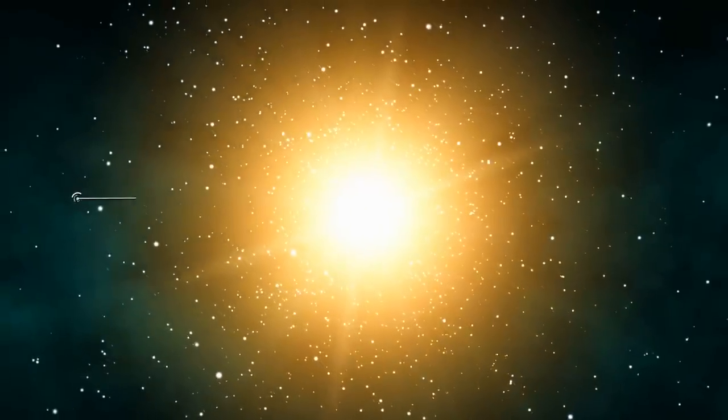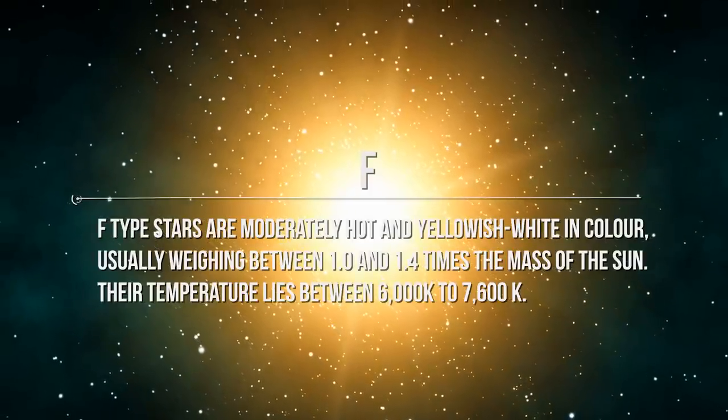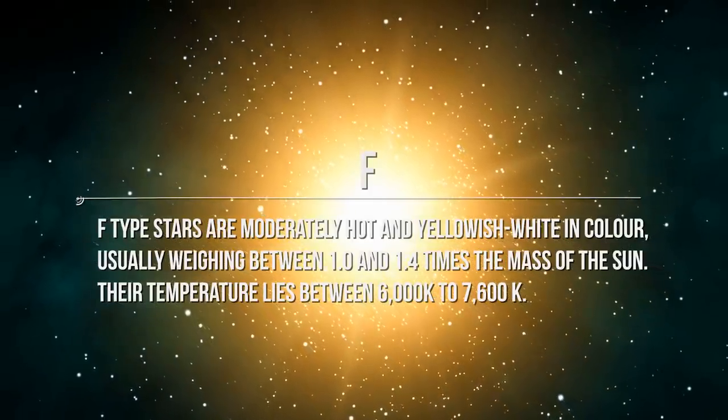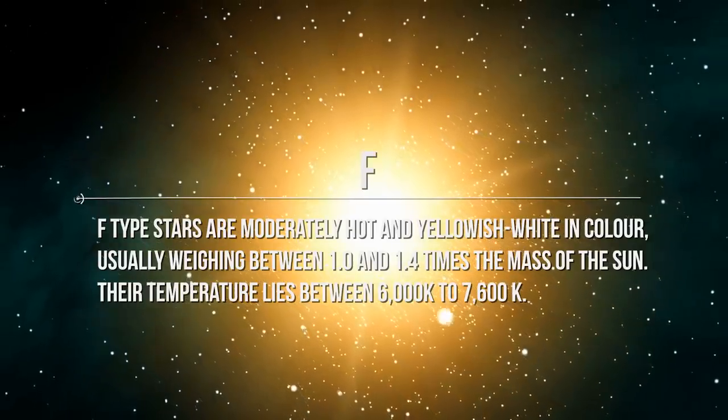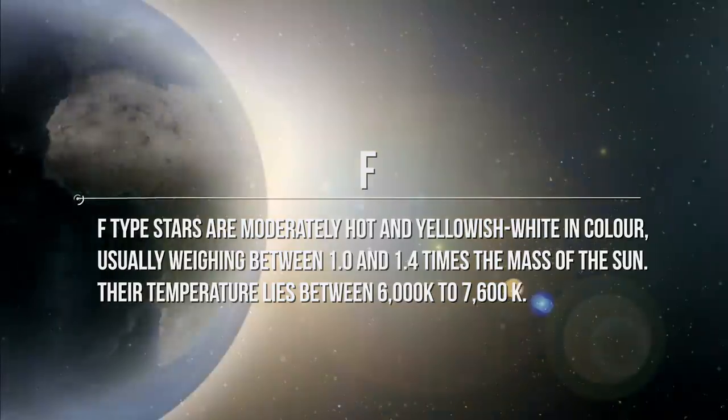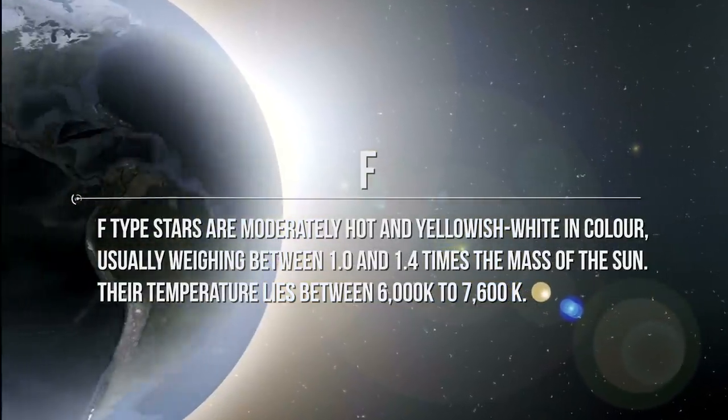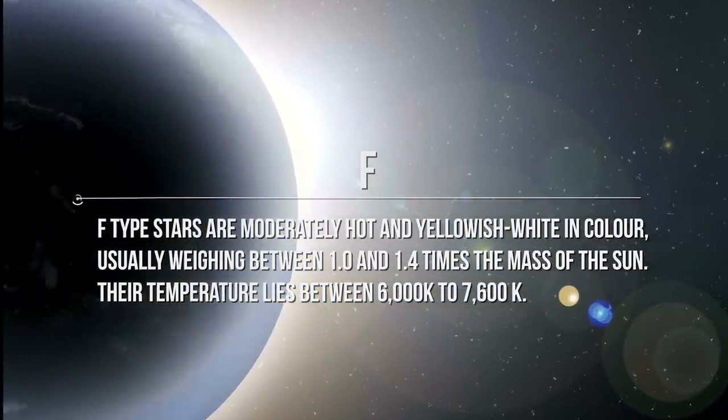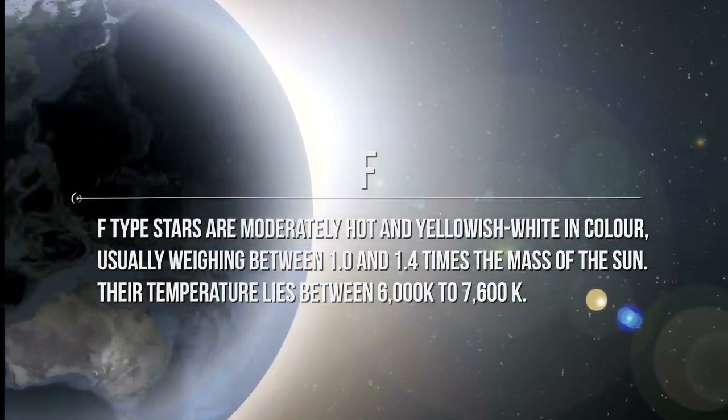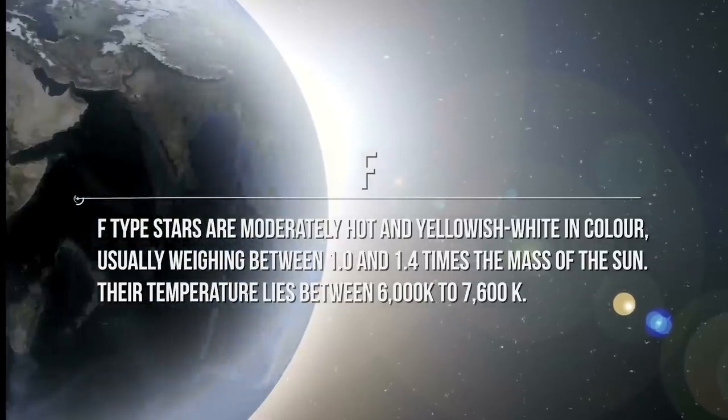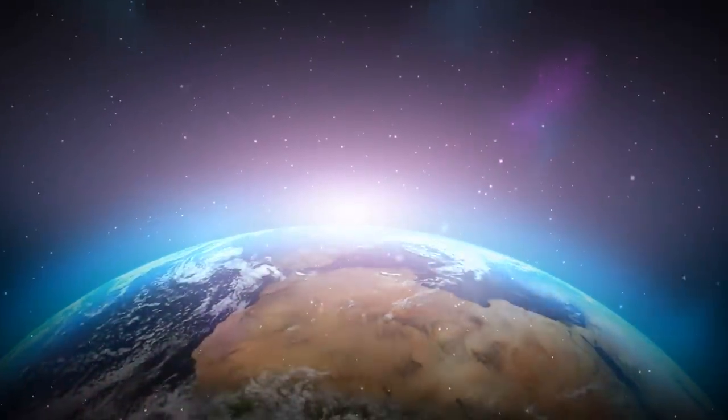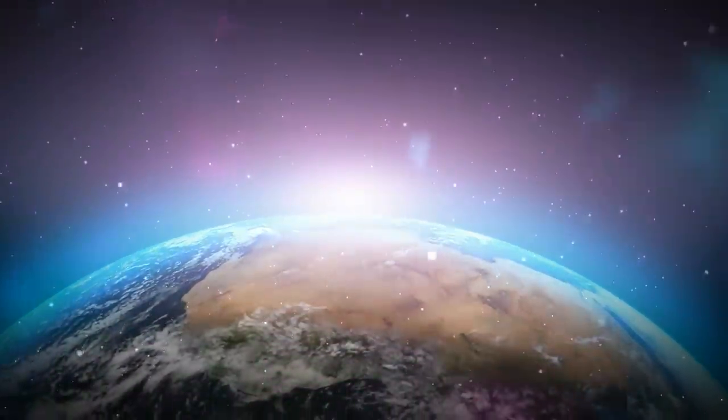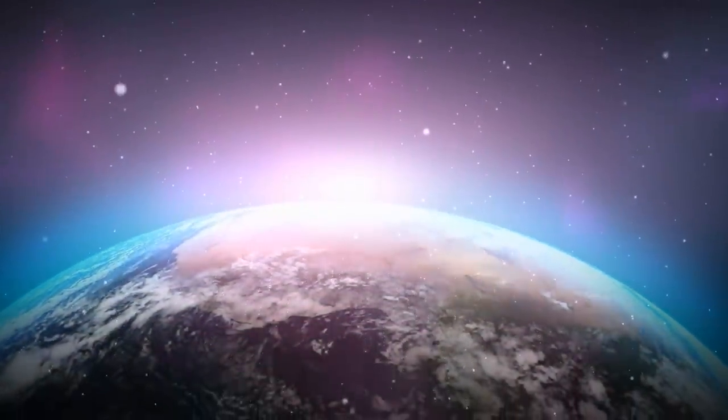Next is type F. F-type stars are moderately hot and yellowish-white in color, usually weighing between 1.0 and 1.4 times the mass of the Sun. Their temperature lies between 6,000 Kelvin to 7,600 Kelvin. It is also believed that life can also exist on this particular type. They are known for emitting a large amount of light in the form of radiation, e.g., UV radiation, which is harming our planet Earth.